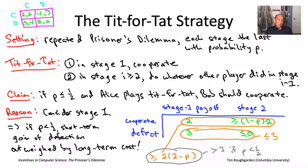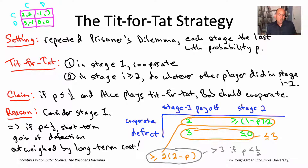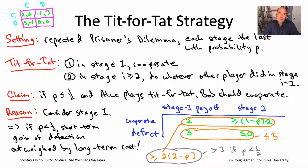That's the most important history surrounding the tit-for-tat strategy. In the last slide for this module, let's look at how the lessons learned from the repeated prisoner's dilemma and the tit-for-tat strategy can be used to inform the design of a peer-to-peer file sharing system.